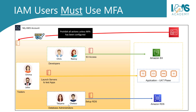Remember that deny always overrides allow. So even if you have one policy that grants you access to a service but another one that denies access, then you will not be able to access that service. In our case, unless a specific condition has been met — and that condition is that you need to be authenticated with multi-factor authentication before you can access the AWS services you need to work with.